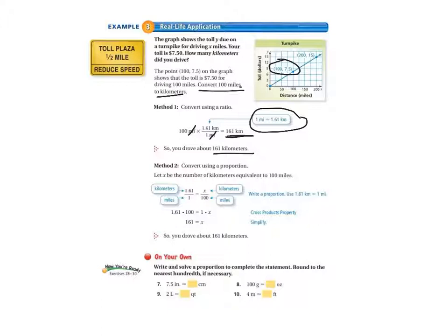Method two is we convert using a proportion. So we let X be the number of kilometers equivalent to 100 miles. We put 1.61, and that's kilometers, over 1 mile. And remember, when you're using a proportion, you have to have your units the same on both sides. So we've got kilometers over miles and kilometers over miles on both sides of the equal sign.